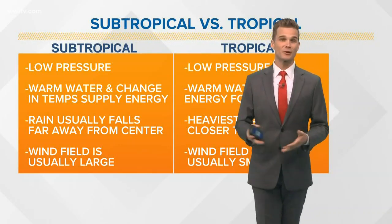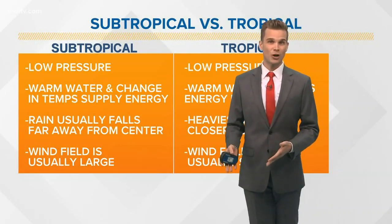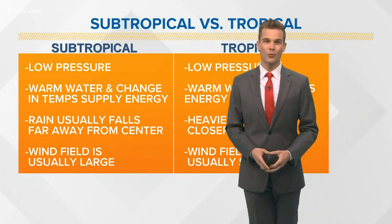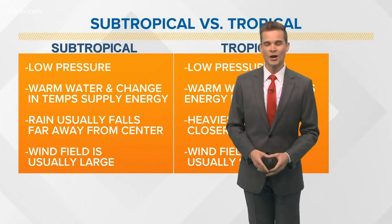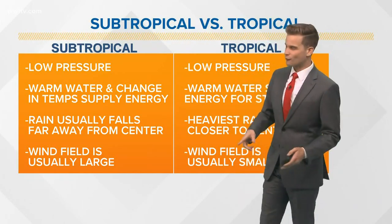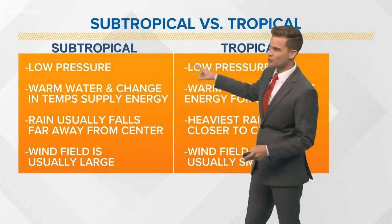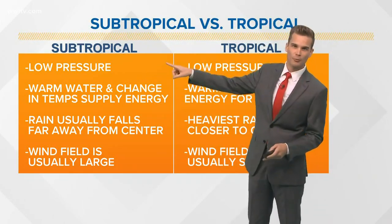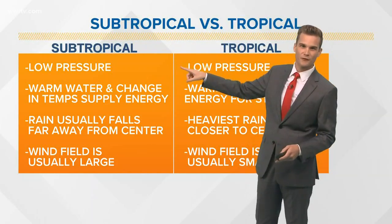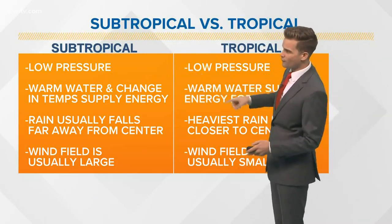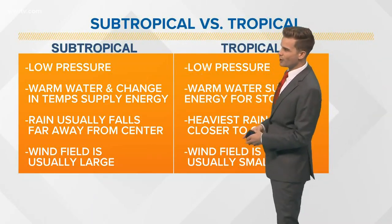A lot of times during hurricane season you hear terminology like subtropical and tropical, and you might be wondering what the difference is. We're going to break it down for you. One thing that is similar between the two: they're both low pressures — there's no difference there — and they both feed off the warm water of the ocean.